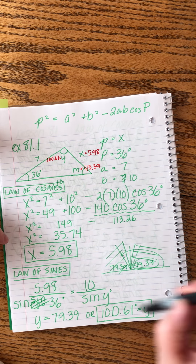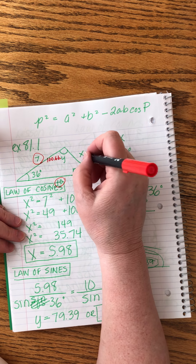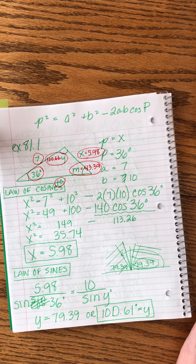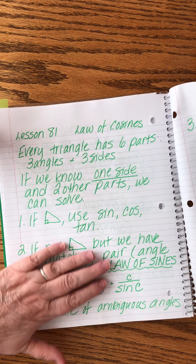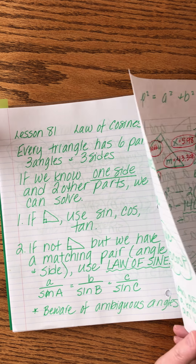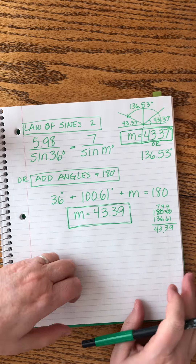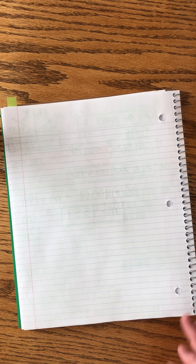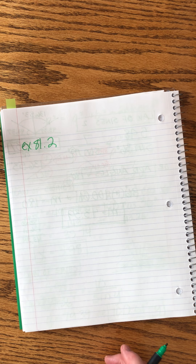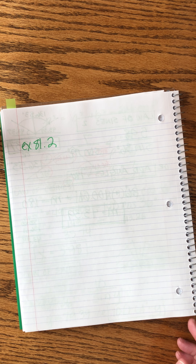Now we have all three sides and all three angles — the triangle is solved. The rule of thumb: use the step-three decision guide to figure out what to use first. Usually you start with the law of cosines, then switch to the law of sines, then maybe something even simpler. You get to use your brain and figure out which tools are most useful as you go.